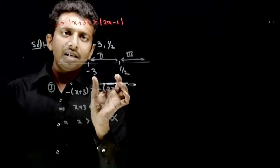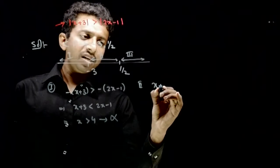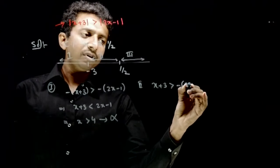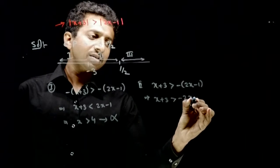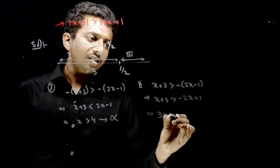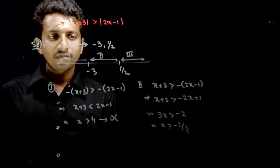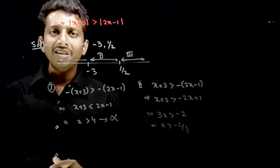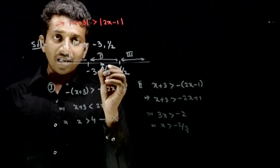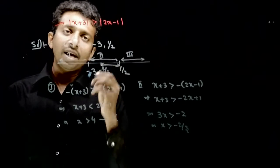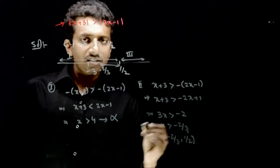Let us solve in the 2nd interval. Here (x plus 3) is positive and (2x minus 1) is negative. So the inequality becomes: x plus 3 is greater than minus of (2x minus 1), which implies x plus 3 is greater than minus 2x plus 1, which implies 3x is greater than minus 2, so x is greater than minus 2 by 3. Since we are in the interval minus 3 to half, x belongs to (minus 2 by 3, half) is the solution in this interval.